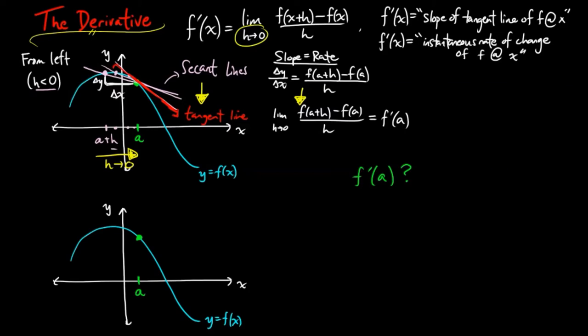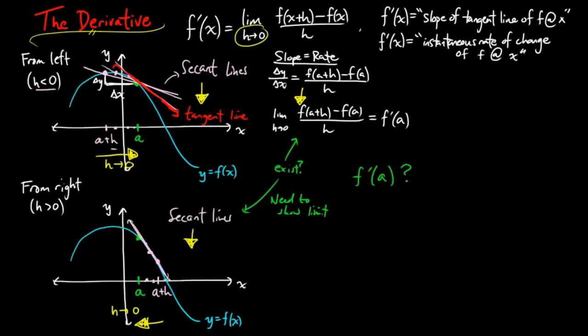But we technically are not done yet, because we only calculate the limit from the left in this picture. Remember that a limit needs to be checked from the left as well as the right. This means we are taking h to be positive. Then a+h is to the right of a. And as h approaches 0, we get a sequence of secant lines approaching the same tangent line.